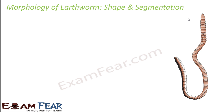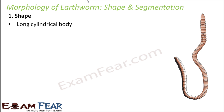There are certain things which are very specific to each organism, so keeping that in mind we will now start talking about the morphology of earthworm. When we say morphology, we are talking about the external features — the external appearance and external structure. Anything that is visible externally comes under morphology. We will first talk about the shape and segmentation of earthworm.